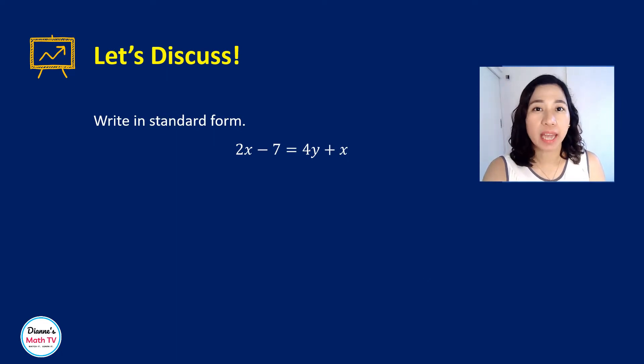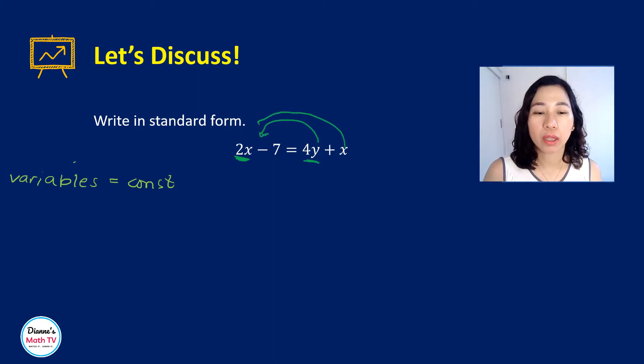Alright, so for our first example, we want to write 2x minus 7 equals 4y plus x. So what have we learned earlier? What we want to do is to put all our variables on one side, on the left-hand side, and then all the constants on the other side. So how do we do that? We transfer. I will collect all the variables on one side. So I will put 4y here and x on the other side.